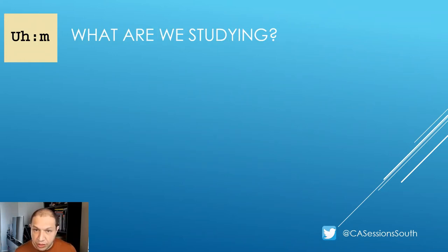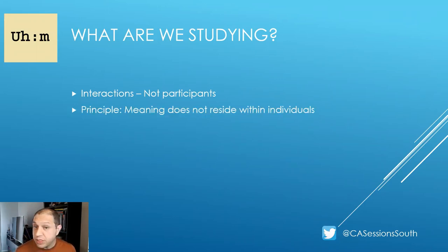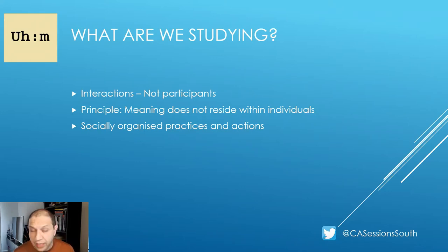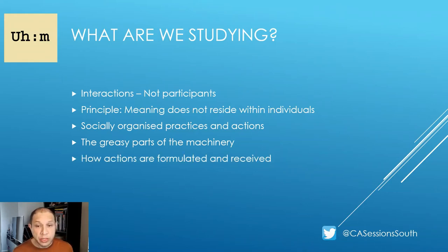These are the basic procedures for doing CA. Next, we're going to look at what we, as conversation analysts, are actually studying. As obvious as it may seem, we are studying interactions — not, in the main, participants. A key principle of CA is that meaning does not reside within individuals and is not fixed by the words they use. Instead, CA attends to socially organised practices and the actions they implement during interactions. This has been described as the greasy parts of the machinery, or the mechanisms of interaction. In short, we are studying social practices that implement social actions, and we are interested in how these actions are formulated and how they are received.